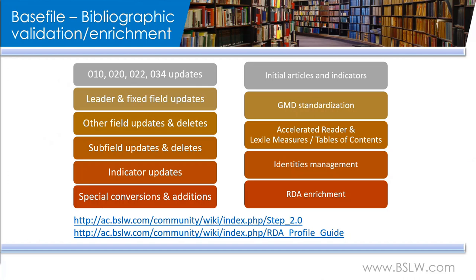This includes correcting the formatting of certain fields, correcting obsolete fields and subfields, checking and correcting indicators, correcting GMD terminology or even removing it, adding lexile measures or accelerated reader levels for juvenile materials, adding tables of contents, and adding subfield zero with the URI to access points. And while it's not part of our validation process, any RDA enrichment needs would be taken care of at the same time.